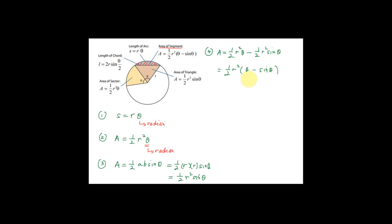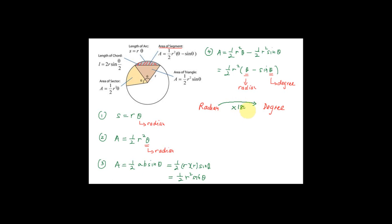One important thing here: this theta is in radian, but in the sine theta part, the theta should be in degrees. Make sure that you can change radian to degree very fast. To change the angle from radian to degree, you multiply by 180 degrees divided by pi. To change degree back to radian, you multiply by pi over 180 degrees.